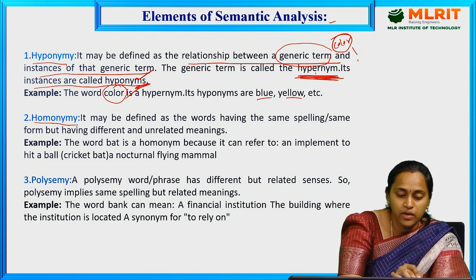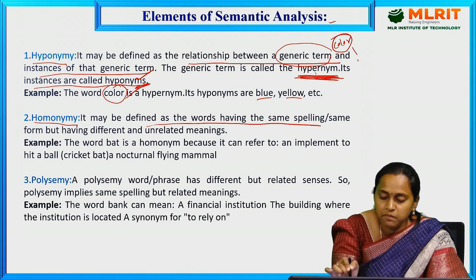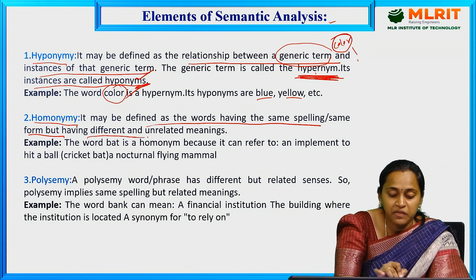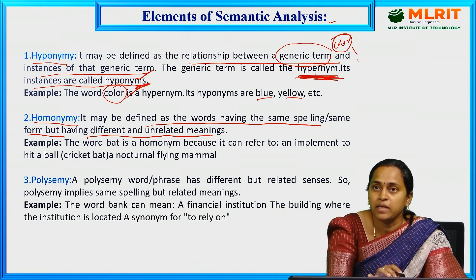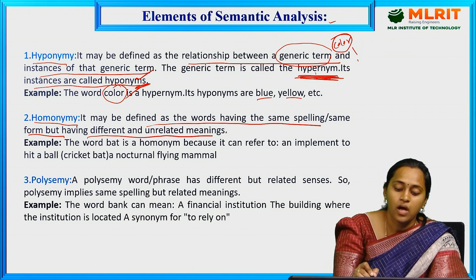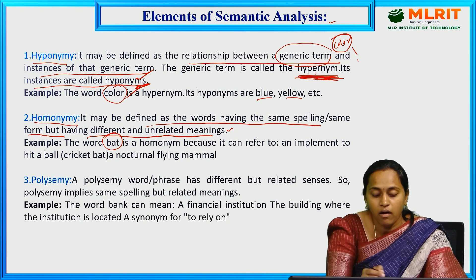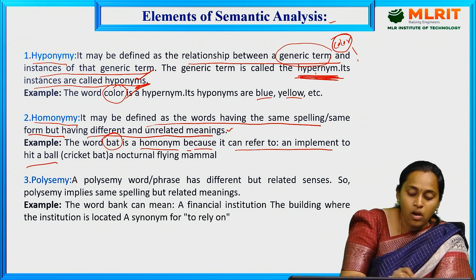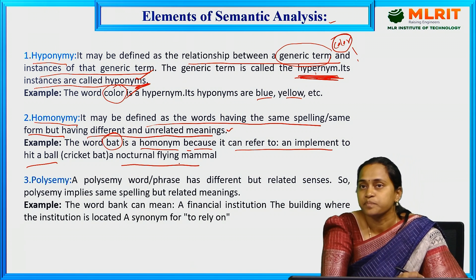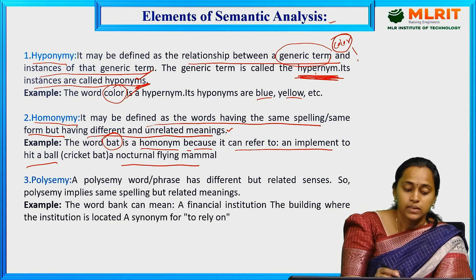Next, homonymy — defined as a word having the same spelling or form but having different, unrelated meanings. For example, the word 'bat' — it can refer to a cricket bat (an implement to hit a ball) or a bat (a flying mammal). The spelling B-A-T is the same, but the meanings are different.